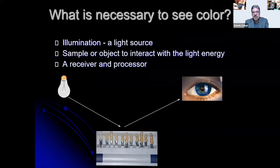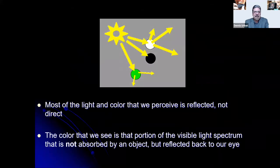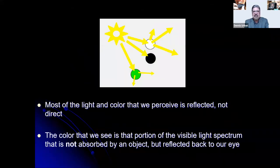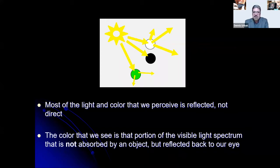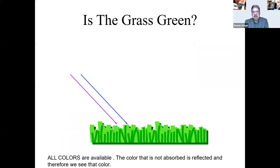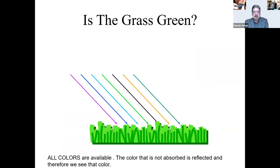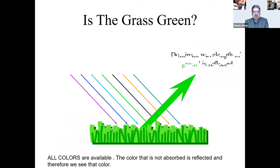In the dental office we have a light source, a shade guide, and our eye — all coming together to take shades. Most of the light and color we perceive is reflected, not direct. The color we see is a portion of the visible light spectrum that is not absorbed by an object but reflected back to our eye. We'll discuss both the traditional and the more scientific way of taking shades.